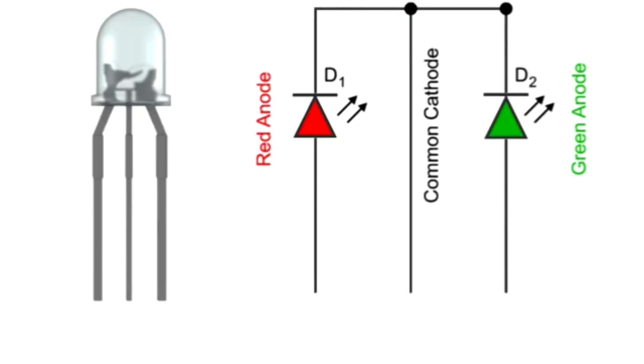When the wire connected to the green anode gets a positive voltage, the light turns green. When the wire connected to the red anode gets a positive voltage, the light turns red.